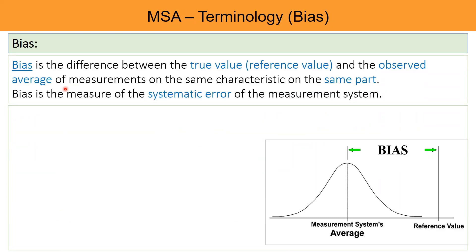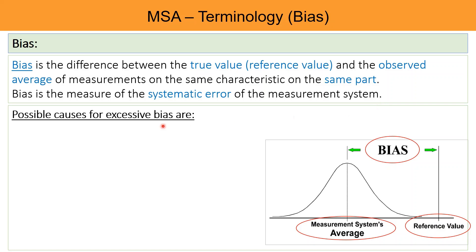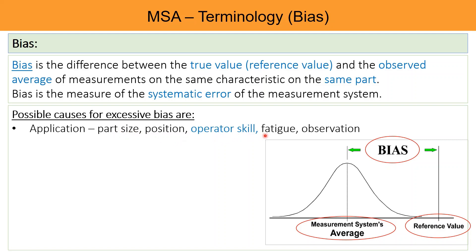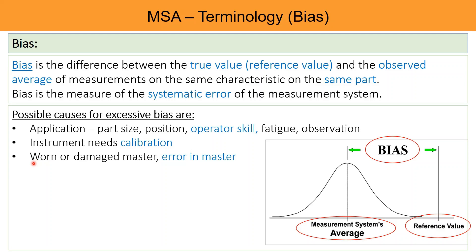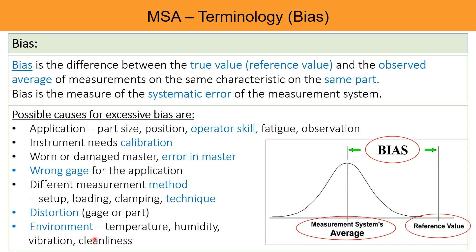Bias is the difference between the true value or reference value and the observed average of measurements on the same characteristics on the same part. Bias is the measure of the systematic error of the measurement system. Possible causes for excessive bias include part size, position, operator skill, fatigue, instrument needing calibration, worn or damaged master or error in the master itself, wrong gauge for the application, different measurement methods, setup or loading or clamping techniques, distortion of the gauge or part, and environmental conditions like temperature, humidity, vibrations, and cleanliness.